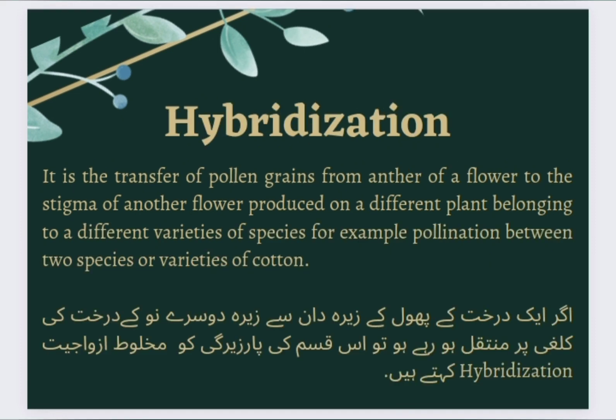Hybridization: It is the transfer of pollen grains from the anther of a flower to the stigma of another flower produced on a different plant belonging to a different variety or species. اگر ایک درخت کے پھول کے جیرے دان سے جیرے دوسری نوع کے درخت کی کلغی پر منتقل ہو رہے ہوں تو اس قسم کی پار جیرگی کو مخلوط ازواجیت Hybridization کہتے ہیں۔